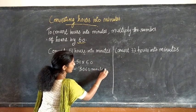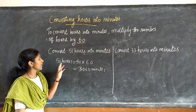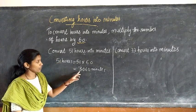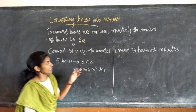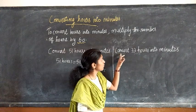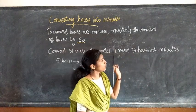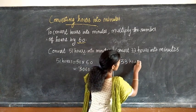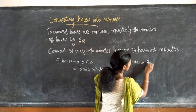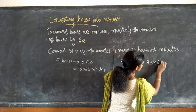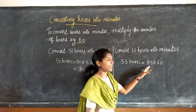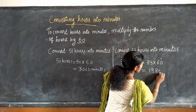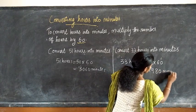First question: convert 51 hours into minutes. We know that 1 hour is equal to 60 minutes. So 51 hours equal to 51 into 60. When we multiply this number, we will get 3060 minutes. Simply multiply the number of hours by 60. So 51 hours equal to 3060 minutes.